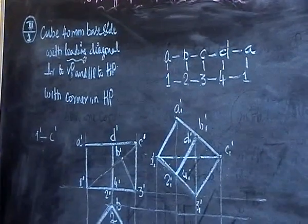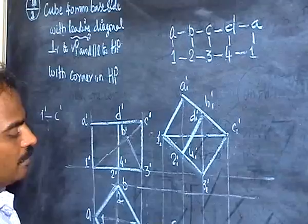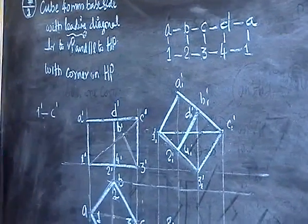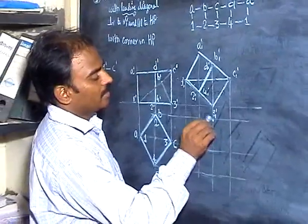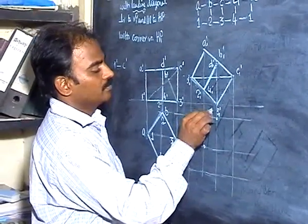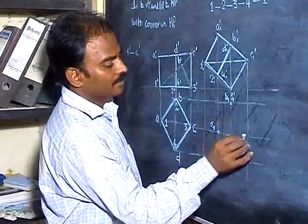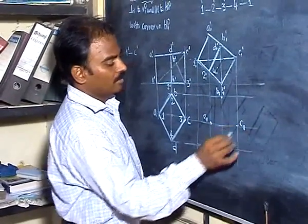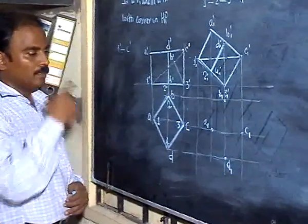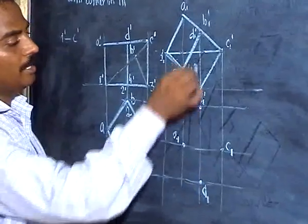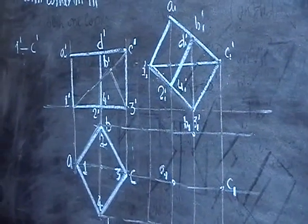Now look at point A horizontal — A vertical is available here and you will be getting A1. B horizontal and B vertical gives you point D1. C horizontal and C vertical — since it is a regular shape you can write D1 even without seeing the diagram. See D horizontal and D vertical gives you D1.